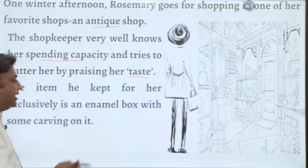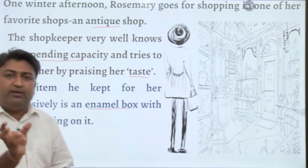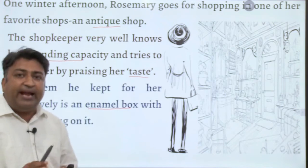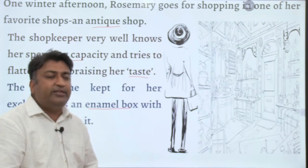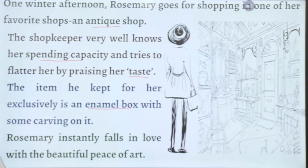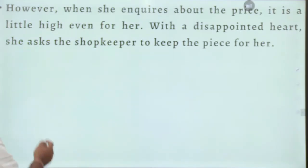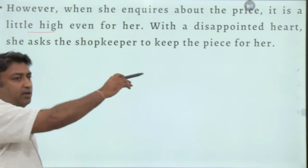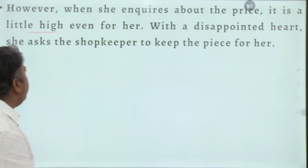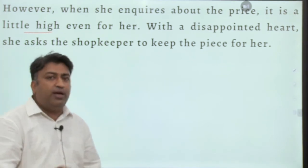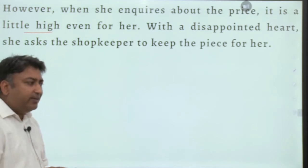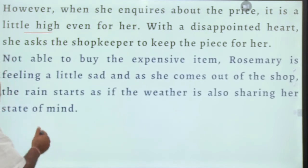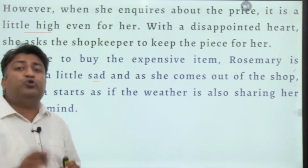The item the shopkeeper has kept for her exclusively this time is an enamel box with carvings — cherubs and beautiful designs. He presents it to Rosemary, telling her he has shown it to no one else. Rosemary instantly falls in love with the beautiful piece of art and wants to purchase it. However, when she inquires about the price, it is a little high even for her, and with a disappointed heart she asks the shopkeeper to keep it for her.